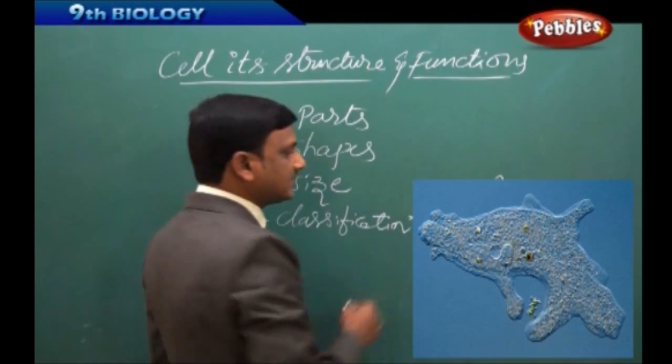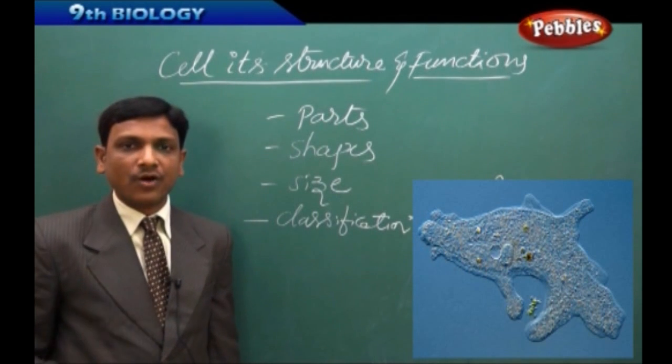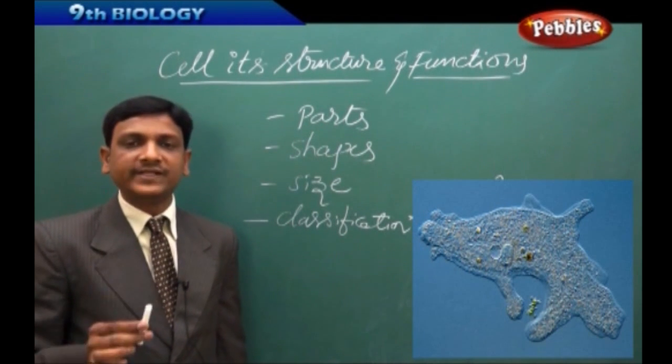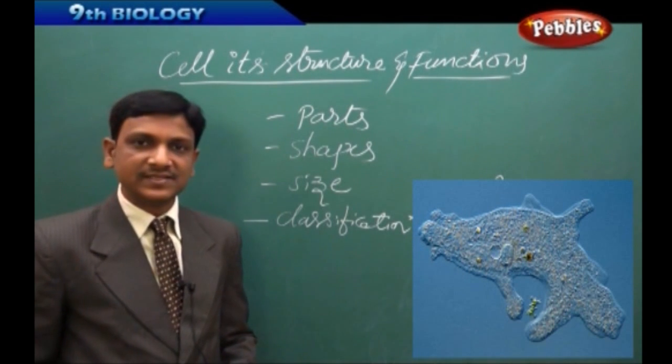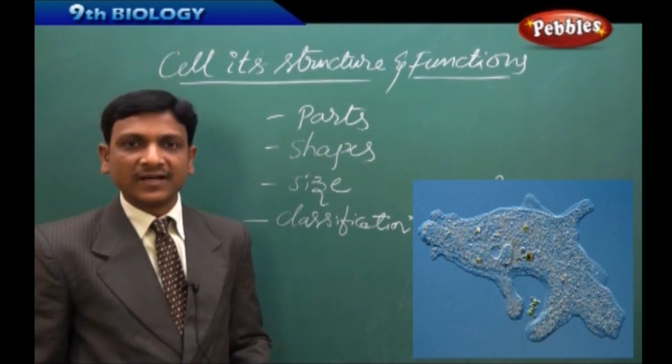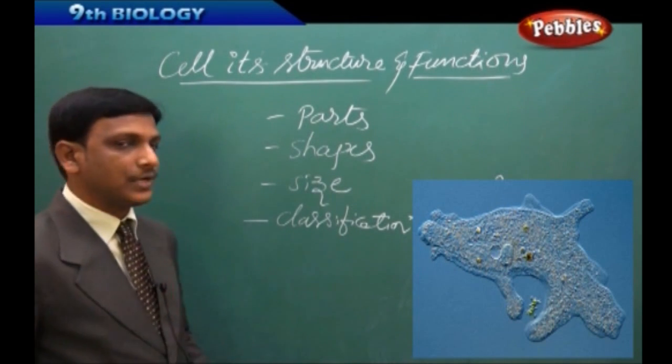So what is this unicellular, multicellular? We learned that the organisms that have only one cell throughout their life are called unicellular organisms. Examples: amoeba, paramecium, euglena. These are the examples of unicellular organisms.